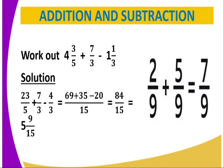So you get 15, we divide by 5 to get 3, and 3 multiply by 23 to get 69. 15, we also divide by 3 to get 5, and we get 5 times 7 to get 35. So here we are going to get 69 plus 35 minus 20, whereby we are going to get 84 over 15.